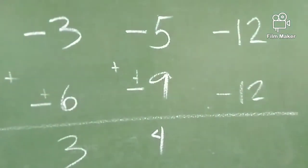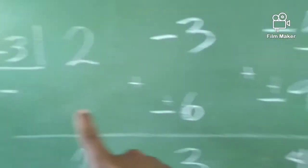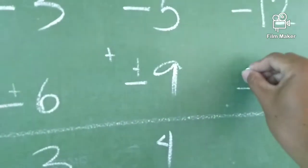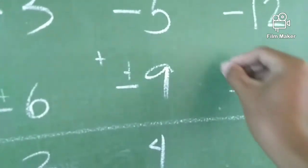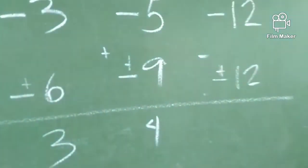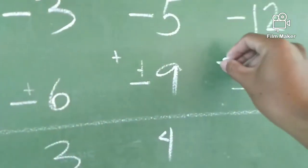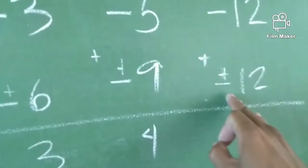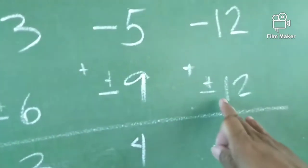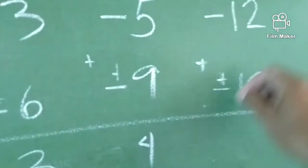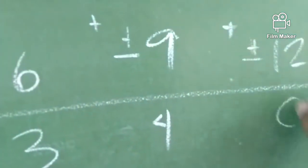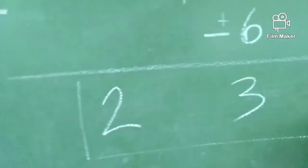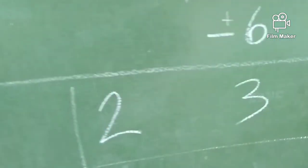Negative 12 minus negative 12. Change the sign of the subtrahend and proceed to addition. Negative 12 plus positive 12 is 0. So, ito na ngayon yung ating magiging sagot.